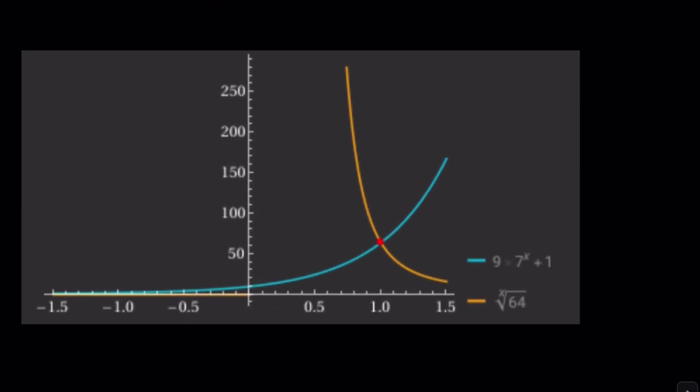Ta-da-da-da. Here we go. So, we have the x root of 64, which is 2 to the power of 6 over x, by the way. And we have the other function, 9 times 7 to the x plus 1. And as you can see, they intersect at a single point, which happens to be at x equals 1. So, that is the only solution to this equation.